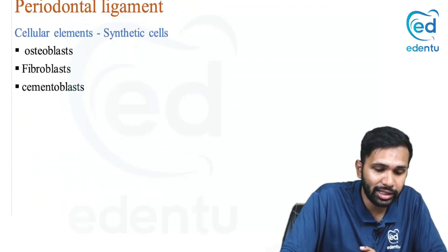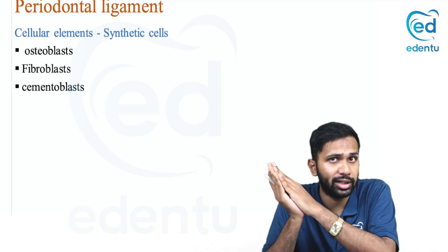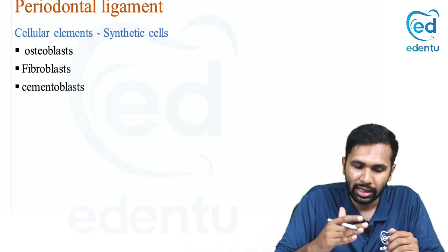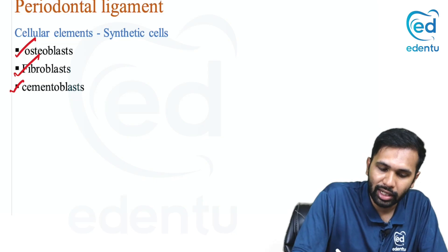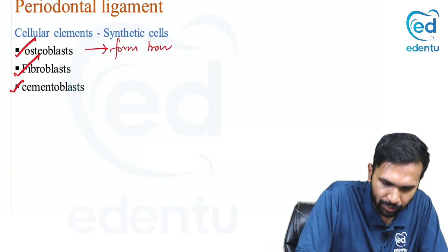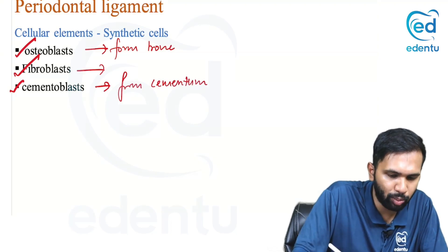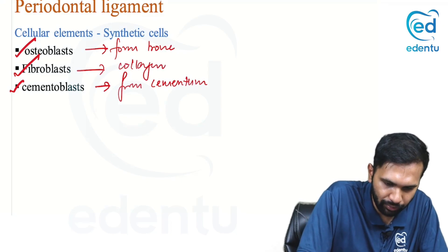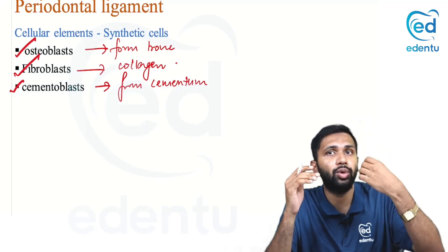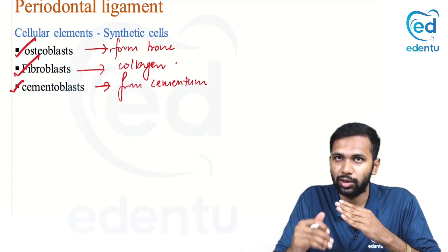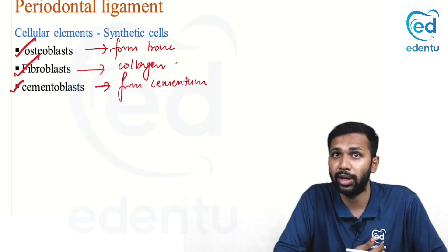The periodontal ligament is a highly cellular tissue. The synthetic cells comprise osteoblasts (which form bone), cementoblasts (which form cementum), and fibroblasts (which produce collagen). In a broader sense, the periodontal ligament has all the cells needed to regrow the entire periodontium: osteoblasts for alveolar bone, cementoblasts for cementum, and fibroblasts for the collagen fibers of the periodontal ligament.